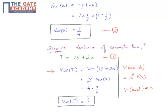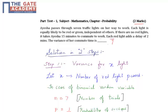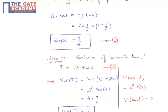My final answer is 7. Always remember, when given such questions, first find the variance of X number of lights in step one, and in step two find the variance of commuted time. In our case, the final answer is 7. Thank you.